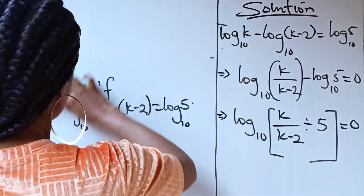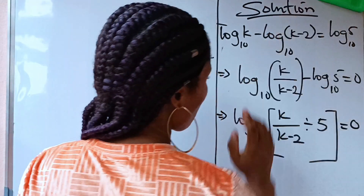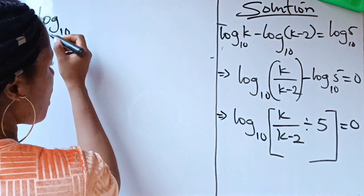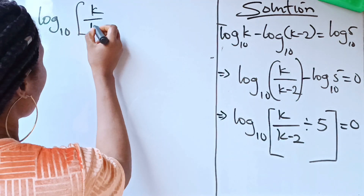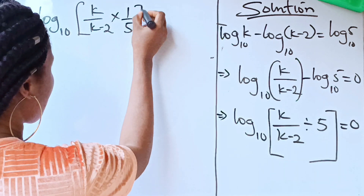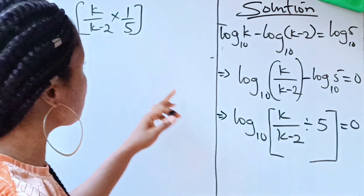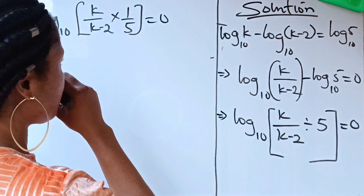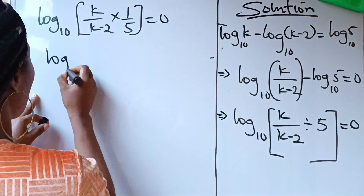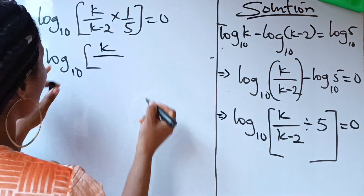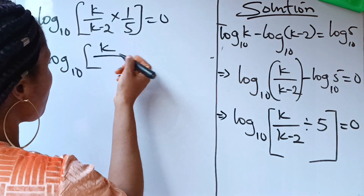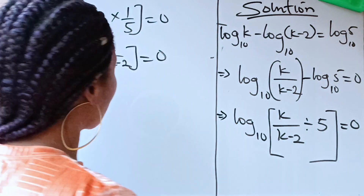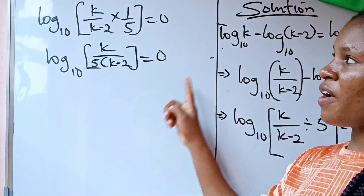Let's continue. We can write this as log base 10 of k over (k minus 2) times 1 over 5 — changing the division to multiplication by taking the inverse of 5. This becomes log base 10 of k all over 5 times (k minus 2), equals zero.